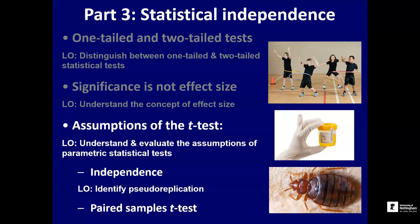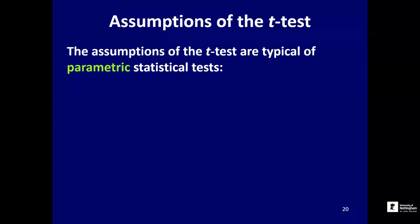This is going to bring in the topic of pseudo-replication, which is a bit slippery but really important. The t-test makes a bunch of assumptions, like any statistical test, and in particular parametric statistical tests make significant assumptions about the underlying distribution of the data. The first assumption I want to look at is that the observations we're studying are statistically independent — and that doesn't sound like it means very much written like that, and it takes a good deal of unpicking.